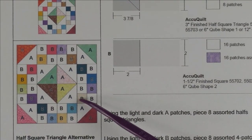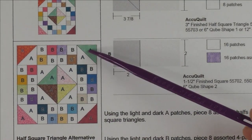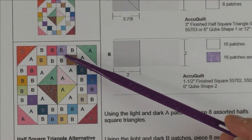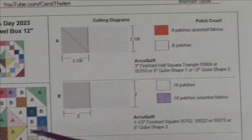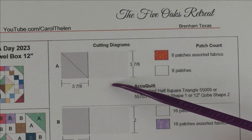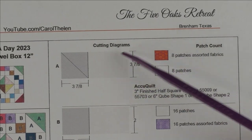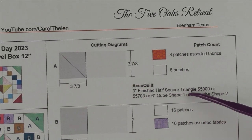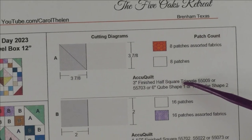Here's the diagram. It's just made up of half square triangles and four patch units. The half square triangles will finish at three inches. Here's the cutting instructions and the AccuQuilt dies you can use.